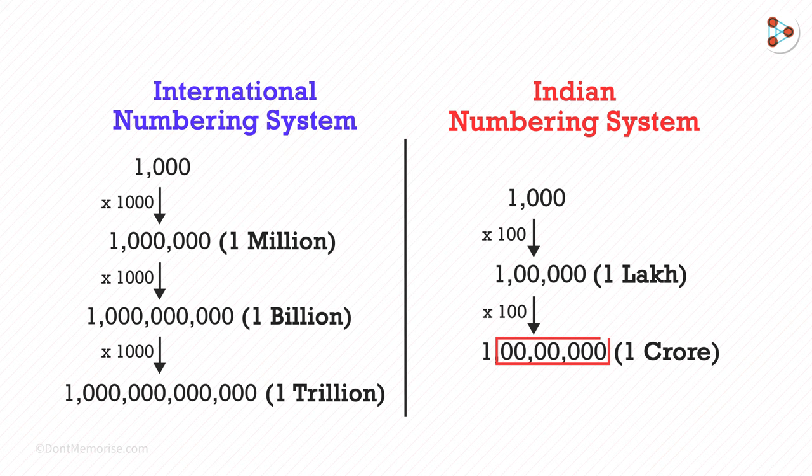So if you notice, the main difference is that in the Indian numbering system, we keep multiplying by 100 to get the next set, while in the international numbering system, we multiply by 1,000.